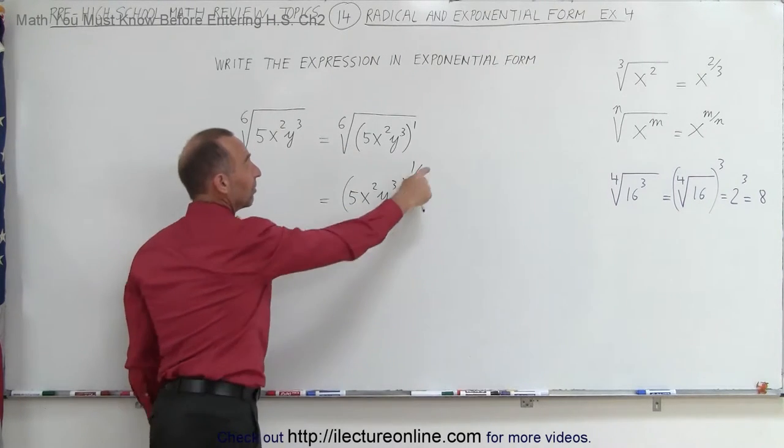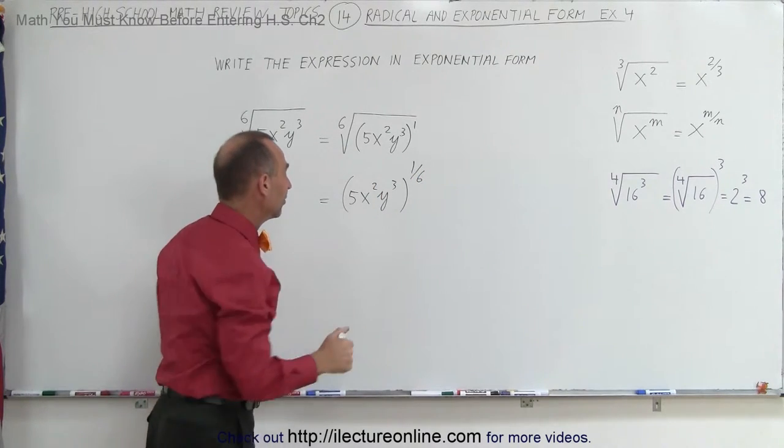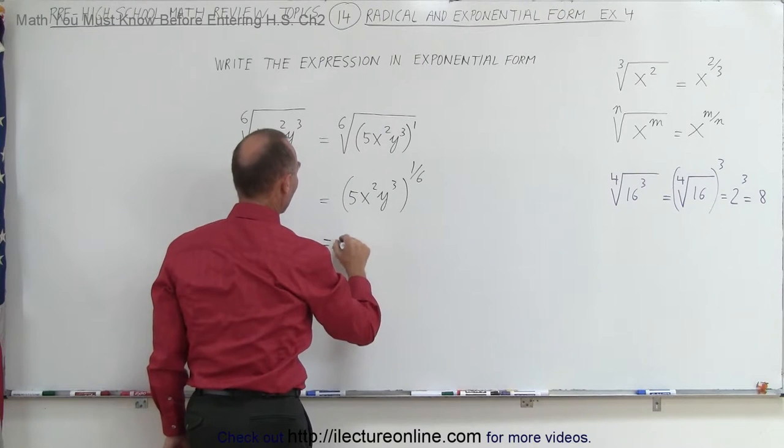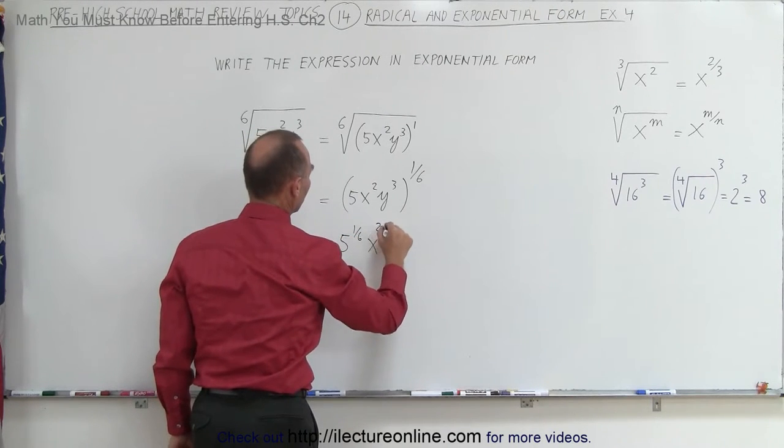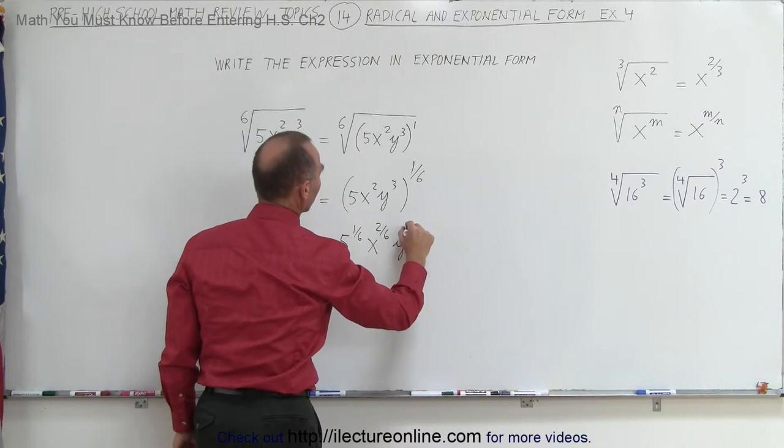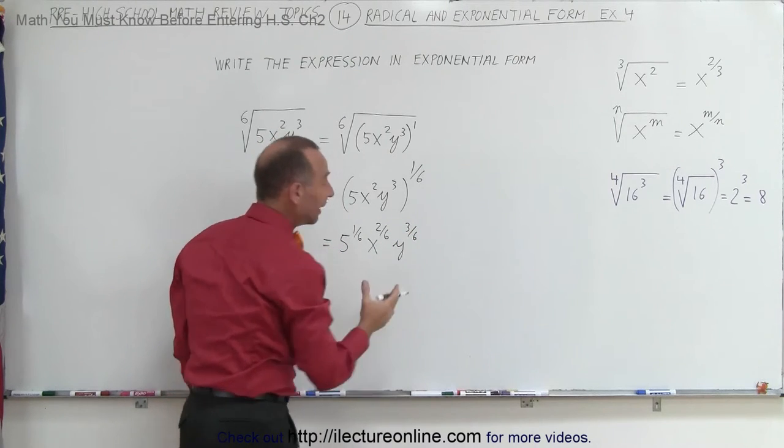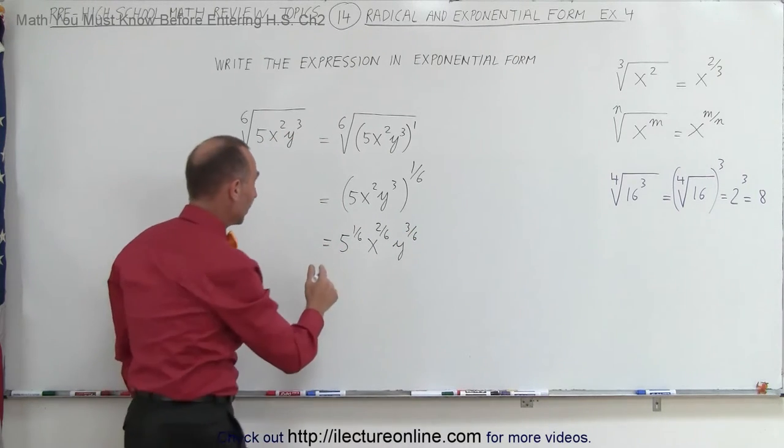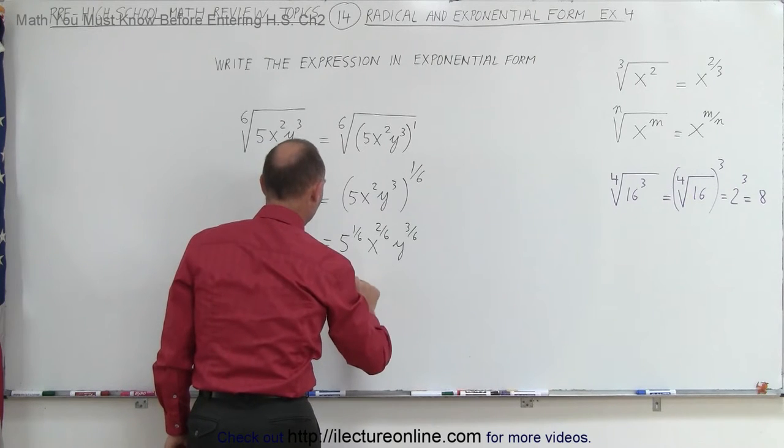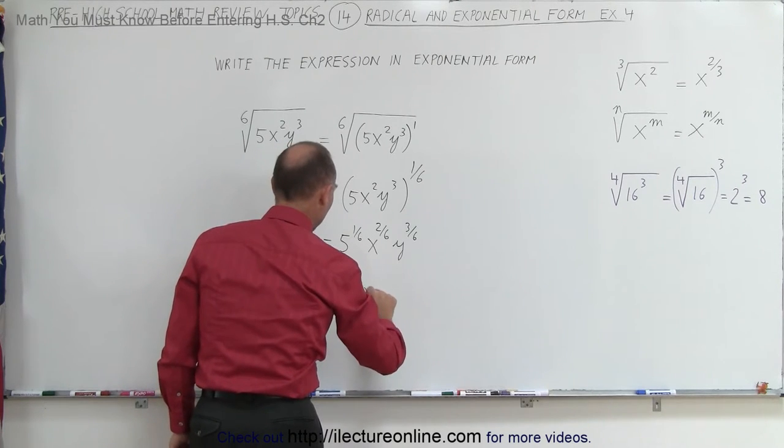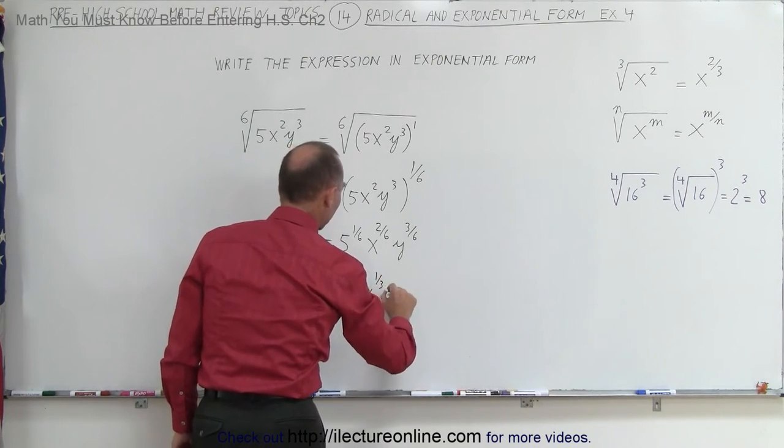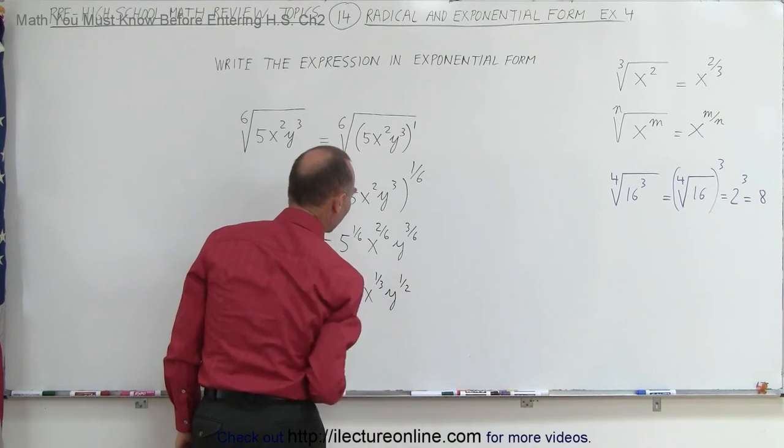Now we can apply this exponent to everything that's inside the parentheses. So this can now be written as 5 to the 1 sixth power, x to the 2 sixth power, and y to the 3 sixth power. And then you can simplify it by writing it as 5 to the 1 sixth power, x to the 1 third power, and y to the 1 half power.